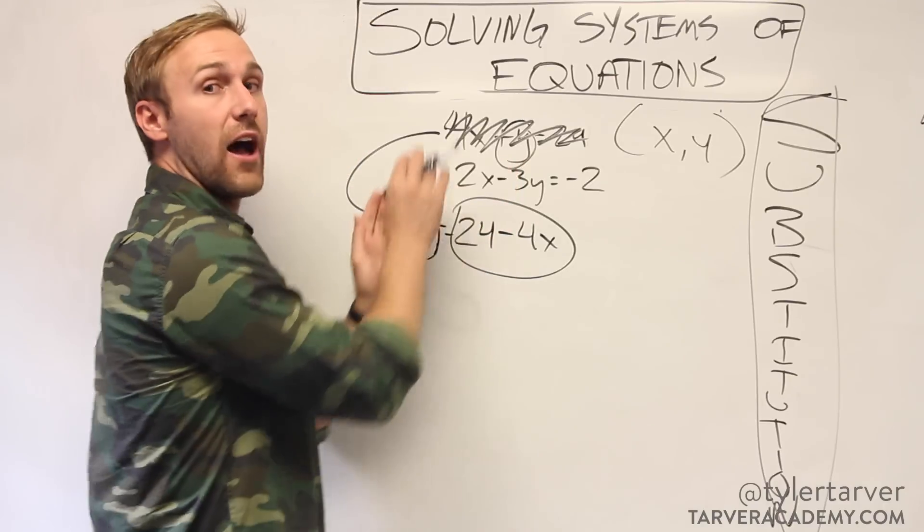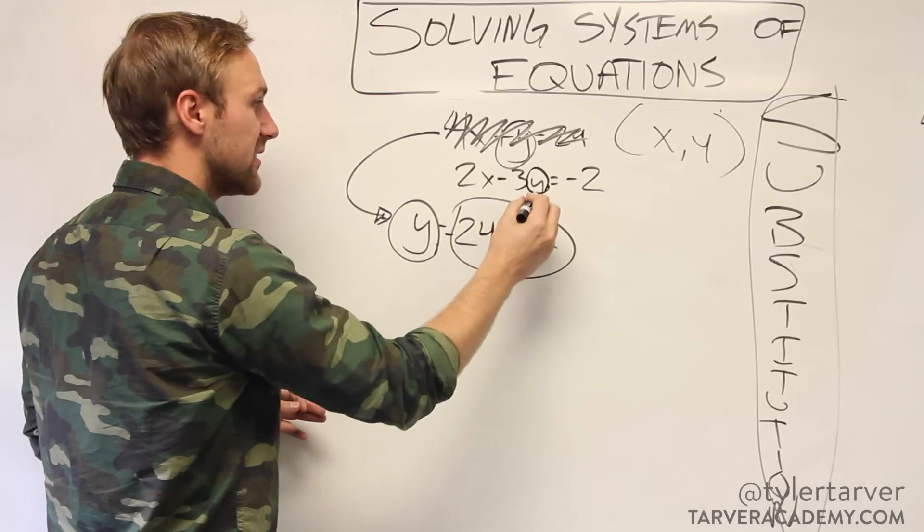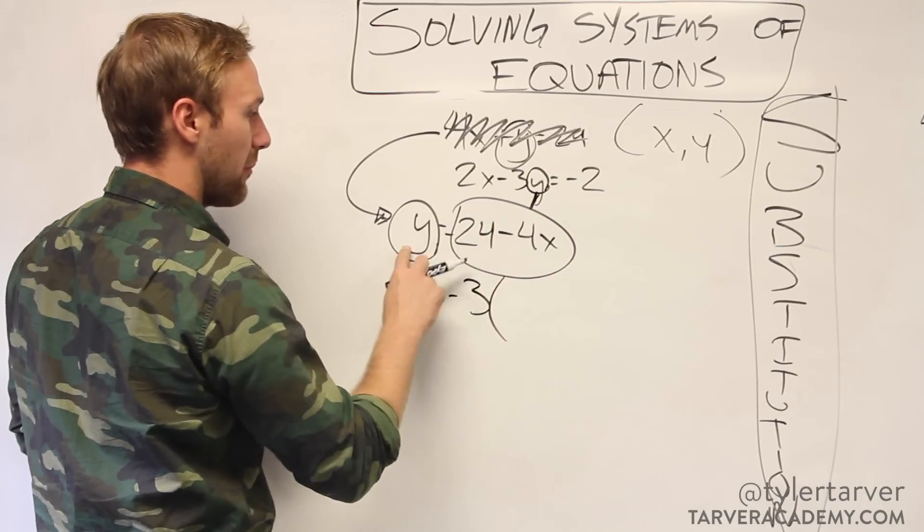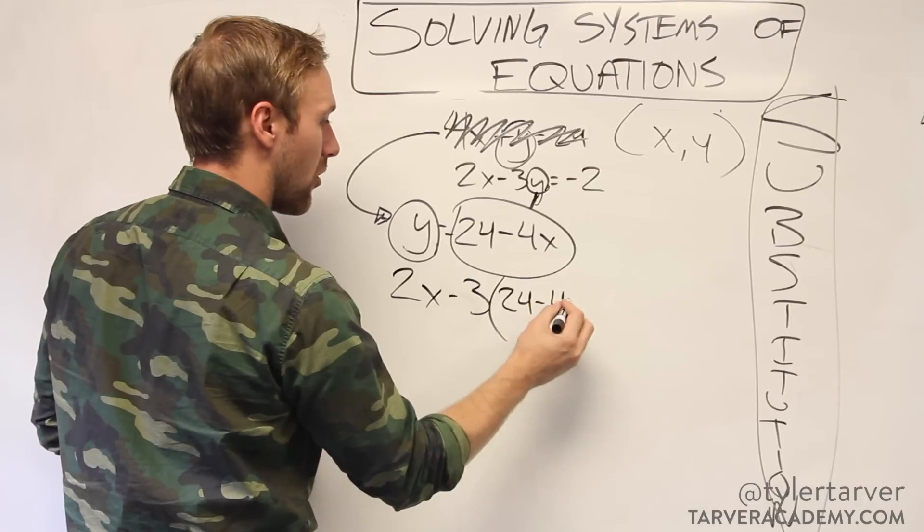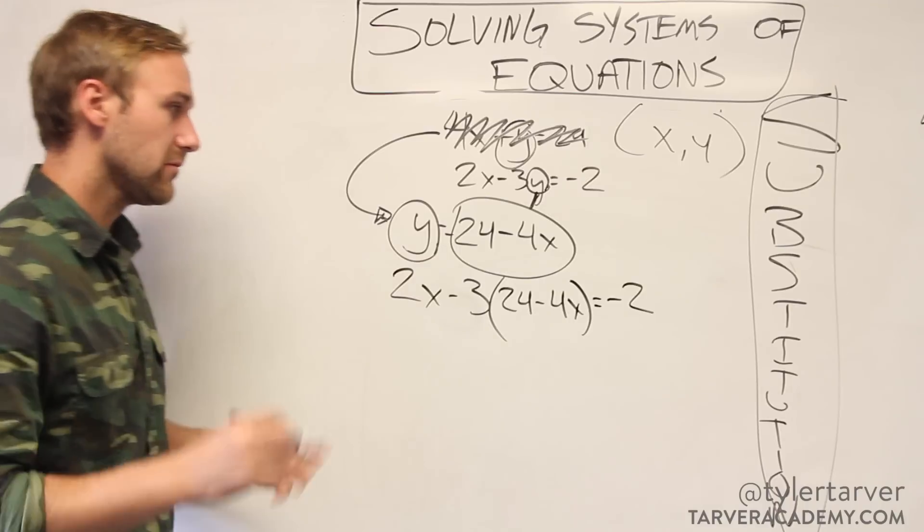Therefore, I can always take out that y and put in 24 minus 4x. So in this equation, the other equation, I want to take out that y and put this in instead. So we've got 2x minus 3 and then I'm replacing that with 24 minus 4x equals negative 2.